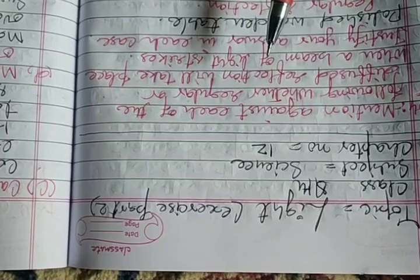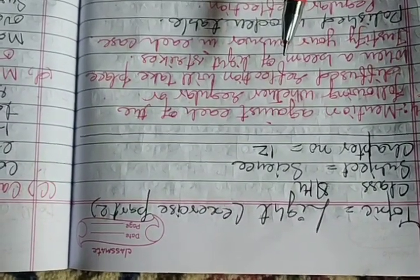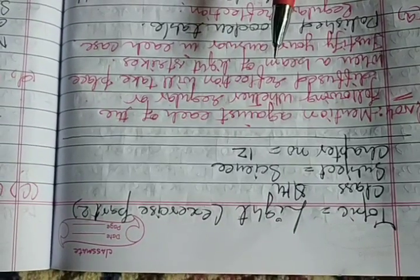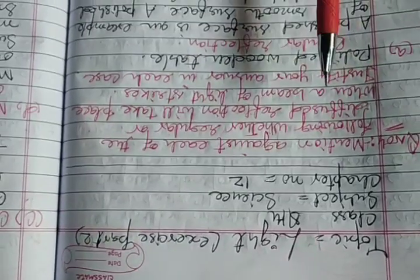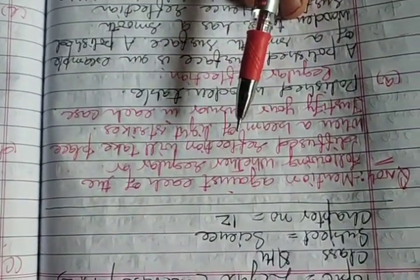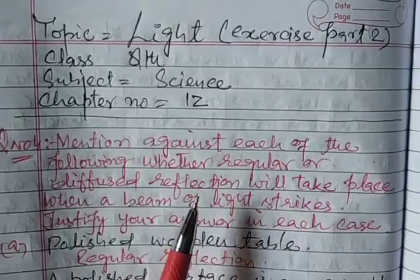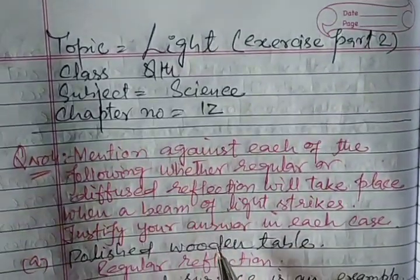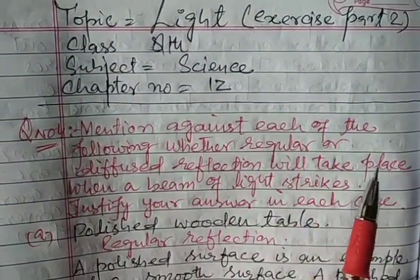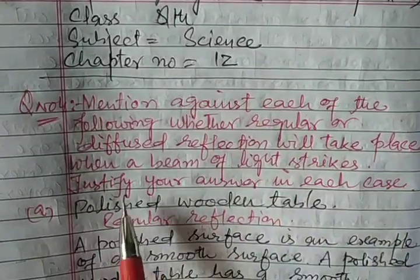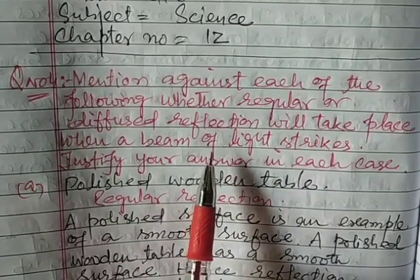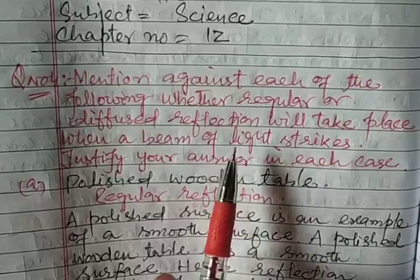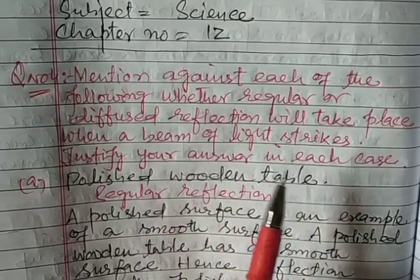This chapter exercise is for me. The questions covered are question number 1, question number 2, question number 3, and question number 4. Question number 4 asks: mention in each of the following cases whether regular or diffused reflection will take place when a beam of light strikes. Justify your answer in each case.